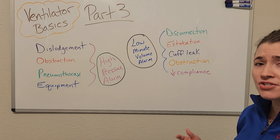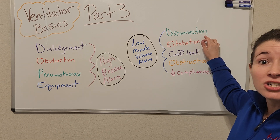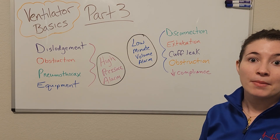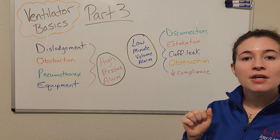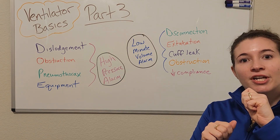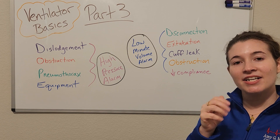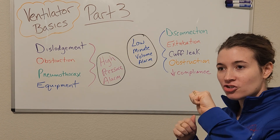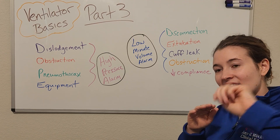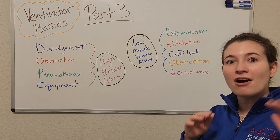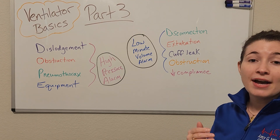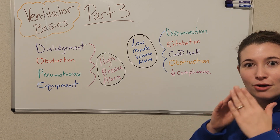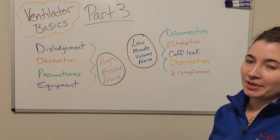Our most common cause of a low minute volume alarm is disconnection — sometimes called popping off the vent — where the circuit tubing becomes disconnected from the actual breathing tube. We see this a lot when turning patients, where the tubing stretches and pops off. To remedy that, we would reattach the circuit tubing.